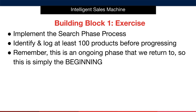Your exercise for this module is to implement the search phase process. I want you to identify and log at least 100 products before progressing. Remember, this is an ongoing phase that we return to, so this is simply the beginning.